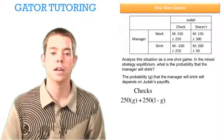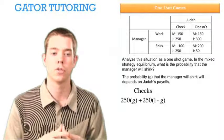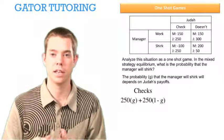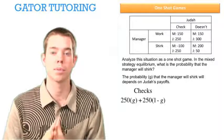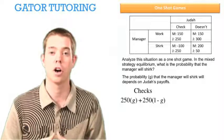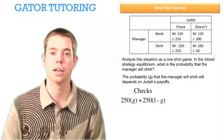Well, if Judah checks, his payments are 250 and we're going to label G now as the probability that the manager will shirk. So if he checks, he gets 250 and that's it. He gets 250 for sure because if he checks, he can correct any problems and still make 300, but he's checked and it costs him $50 to check. So for sure, if Judah checks, he's going to end up with 250.